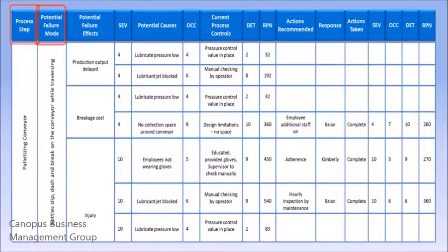Following that is the brainstormed list of potential failure modes. The team gets together and they brainstorm as to what potential failure modes exist in that particular process. This can be done by looking at historic information such as emails, customer complaints, data of performance, etc. Or it can also be a voluntary brainstorming exercise as to what could potentially go wrong.